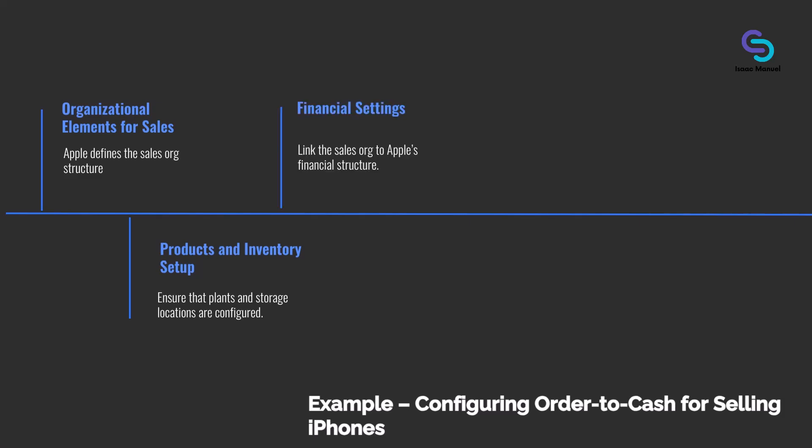Next is financial settings: link the sales org to Apple's financial structure. For instance, assign the sales organization to a company code and set the account determination so that when Apple sells an iPhone, the revenue is recorded in the correct accounts. SAP best practices come with a standard chart of accounts — a list of all accounts. Apple can use it or modify it. Let's say Apple uses a custom chart of accounts due to specific reporting needs. They would upload or configure those accounts and assign it to their company code in a finance configuration step.